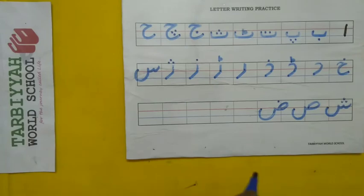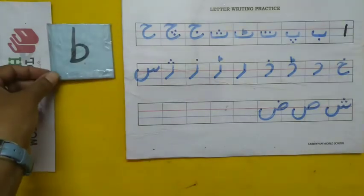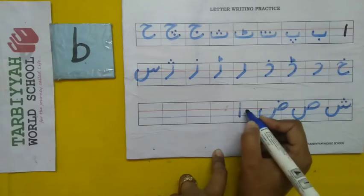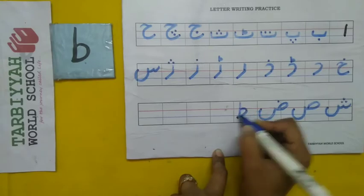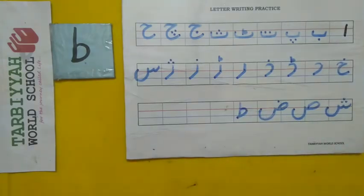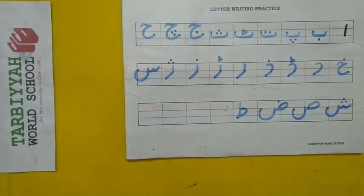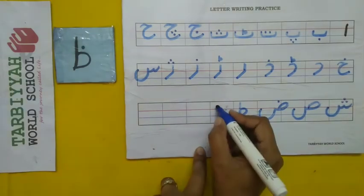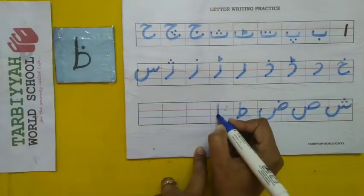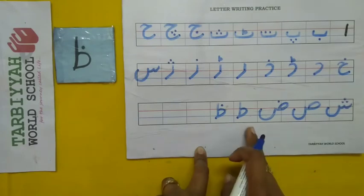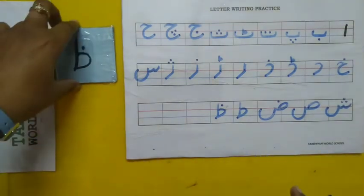And then the next letter is Toy. So how do we write Toy? One standing line and one curve — like this. And after Toy, the next letter is Zoy. So how do we write Zoy? One standing line and one curve, and one dot on top. Toy is empty; Zoy has one dot on top.